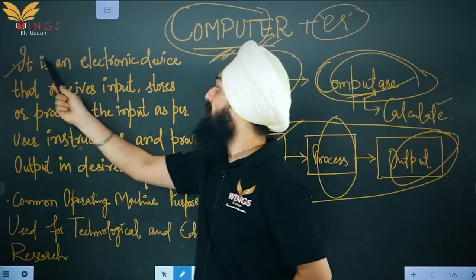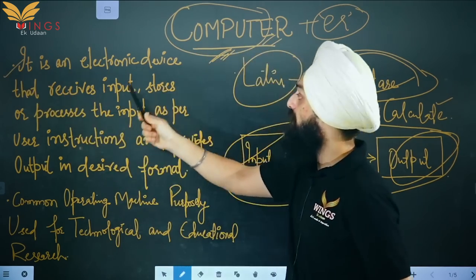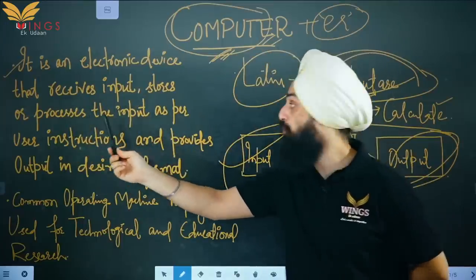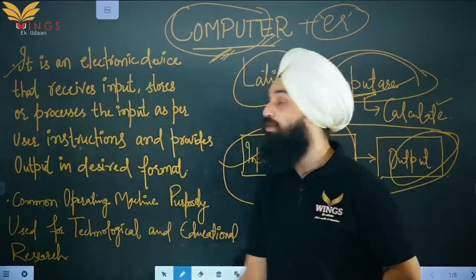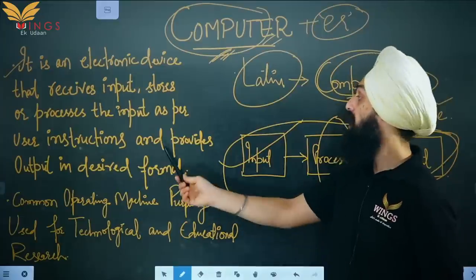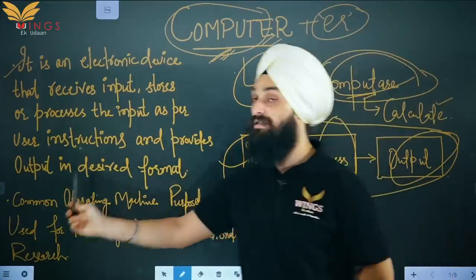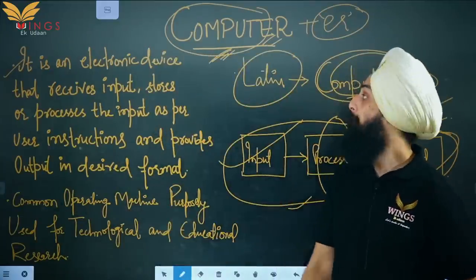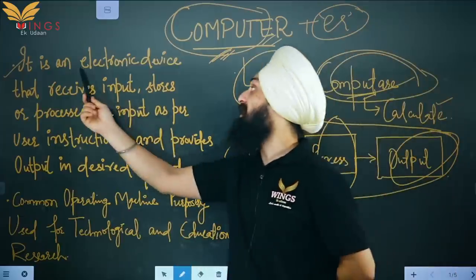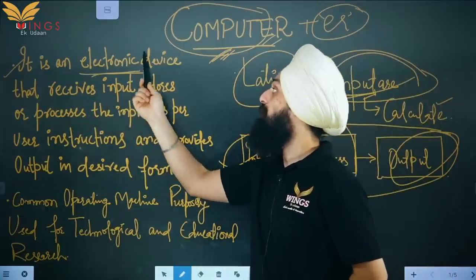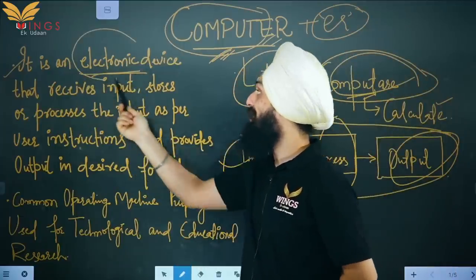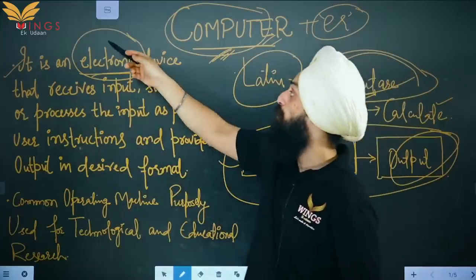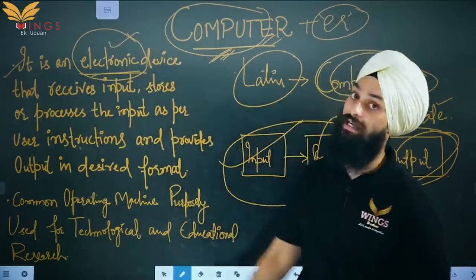The formal definition: a computer is an electronic device that receives input, stores or processes the input as per user instructions, and provides output in a desired format. It is called an electronic device because it operates through electricity.